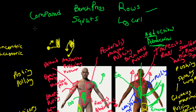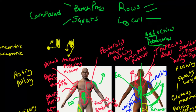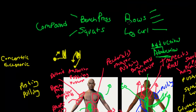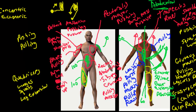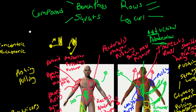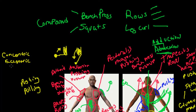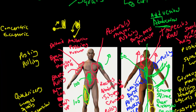Isolation exercises like arm curls and leg extensions are great, but compound lifts work multiple groups: bench press hits pectoralis major, triceps, and deltoid; squats work gluteus maximus, gastrocnemius, and quadriceps; rows hit almost every major back muscle group; leg curls work the hamstrings. With rows you're also hitting the biceps as a pulling motion. That covers all the major muscle groups, compound lifts, and the difference between concentric and eccentric contractions. See you in the next video.